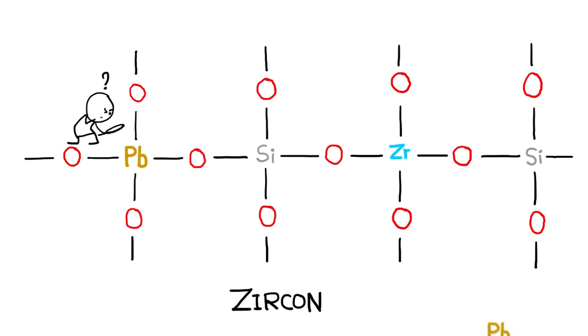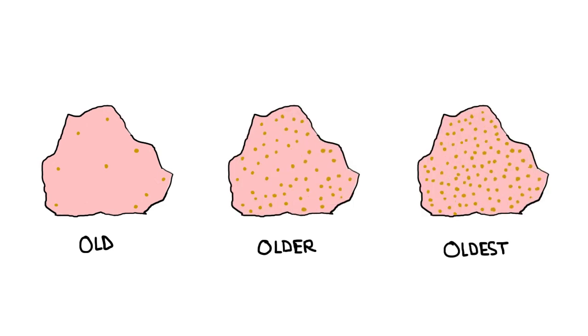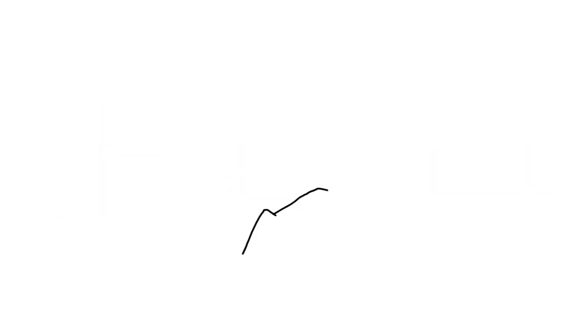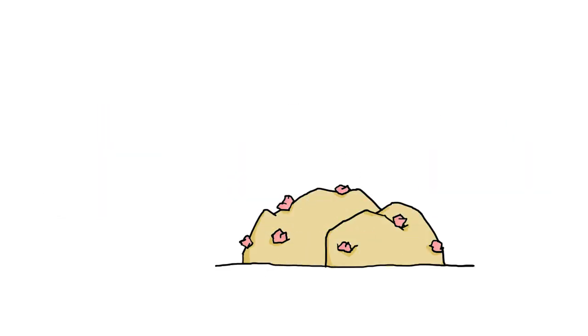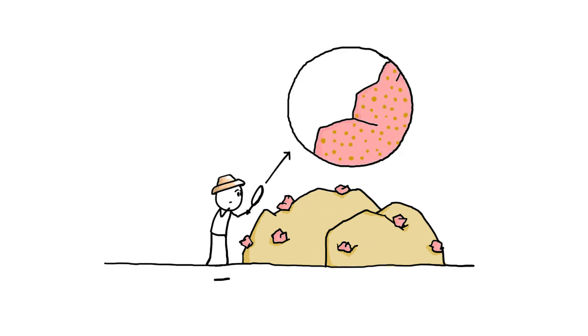Which is weird, because lead isn't similar to zirconium, and so would never have ended up in a zircon crystal on its own. So the more lead you find in a zircon crystal, the older you know it is. And one of the oldest terrestrial minerals ever found – quite possibly the oldest piece of the Earth we know of – happens to be a very lead-filled grain of zircon found embedded in sandstone in Western Australia.